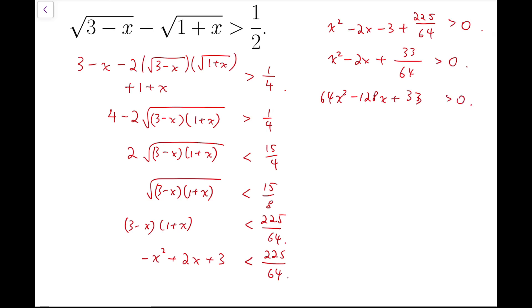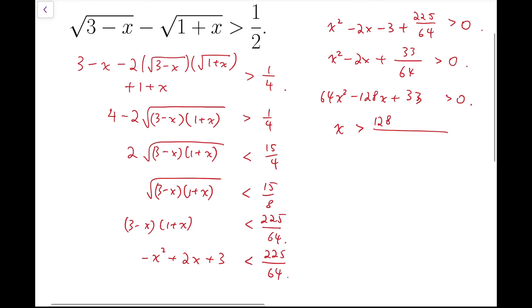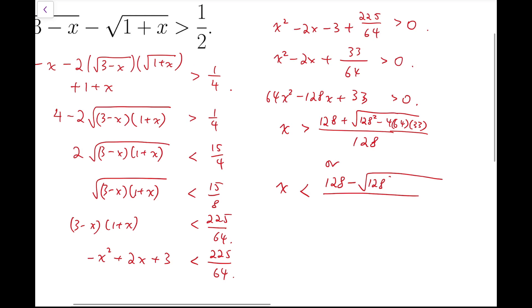Now we can solve with the help of a quadratic formula. So the solution is going to be either x larger than 128 plus, this is actually the bigger root, and the square root of 128 squared minus 4 times 64 times 33 divided by 128, or x is going to be smaller than the smaller root, which is 128 squared minus 4 times 64 times 33 over 128.